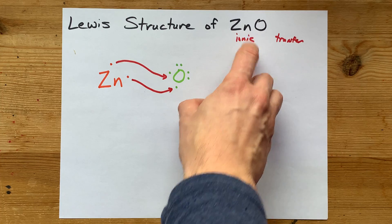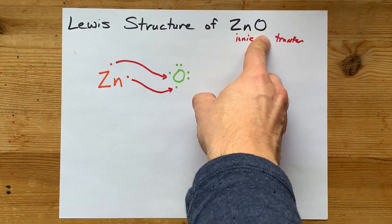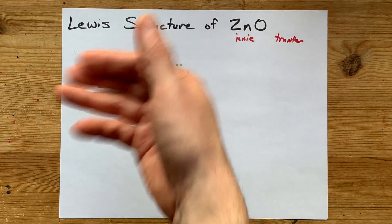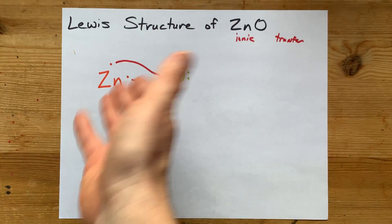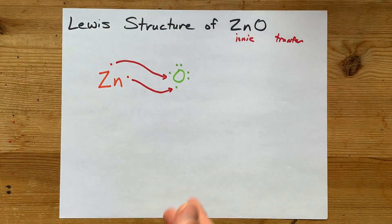The fact that I only need 1 of each is kind of given away here in the formula. Zn, there's no subscript there. O, there's no subscript there. It's 1 of each. That's the formula because you only need 1 zinc for every oxygen. That's the way the molecule works.